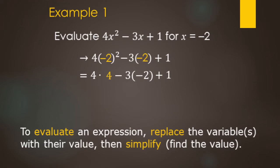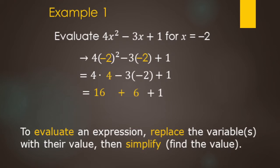Next up is multiplication and division. 4 times 4 makes 16. For the minus 3 times negative 2, we think of this as negative 3 times negative 2 — negative times negative is positive, and 3 times 2 makes 6. Then we still have the plus 1. Now addition and subtraction last, working left to right: 16 plus 6 makes 22, plus 1 makes 23.